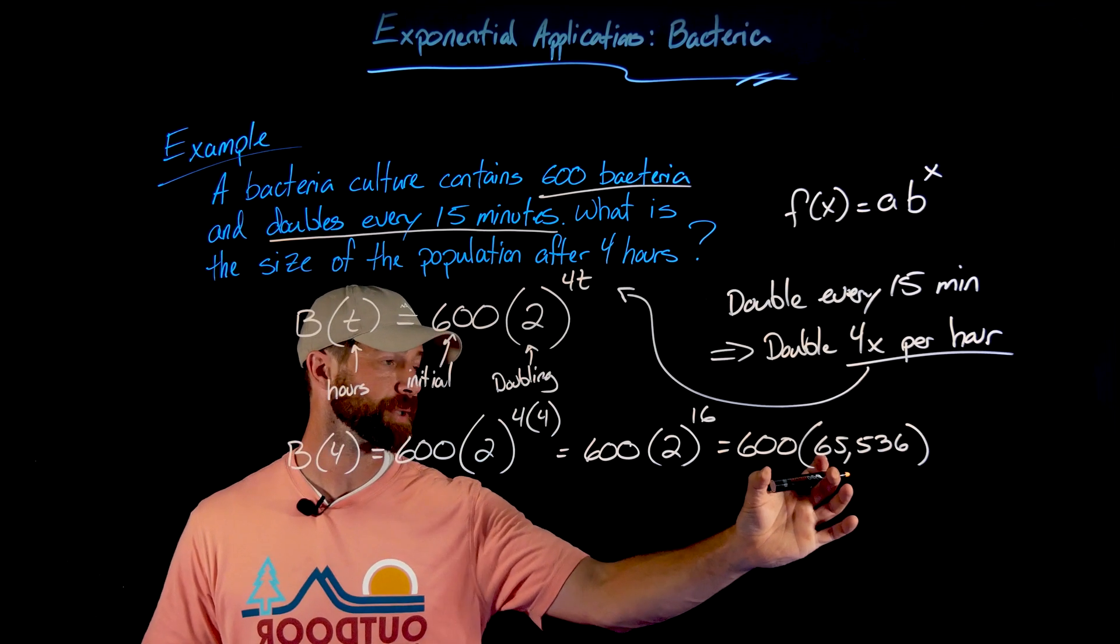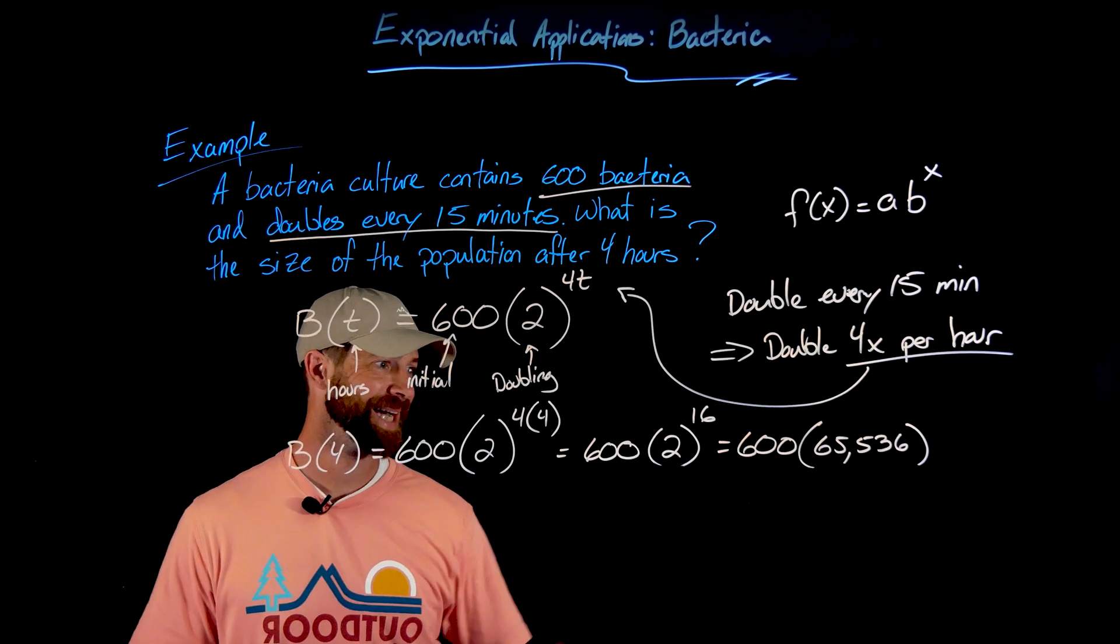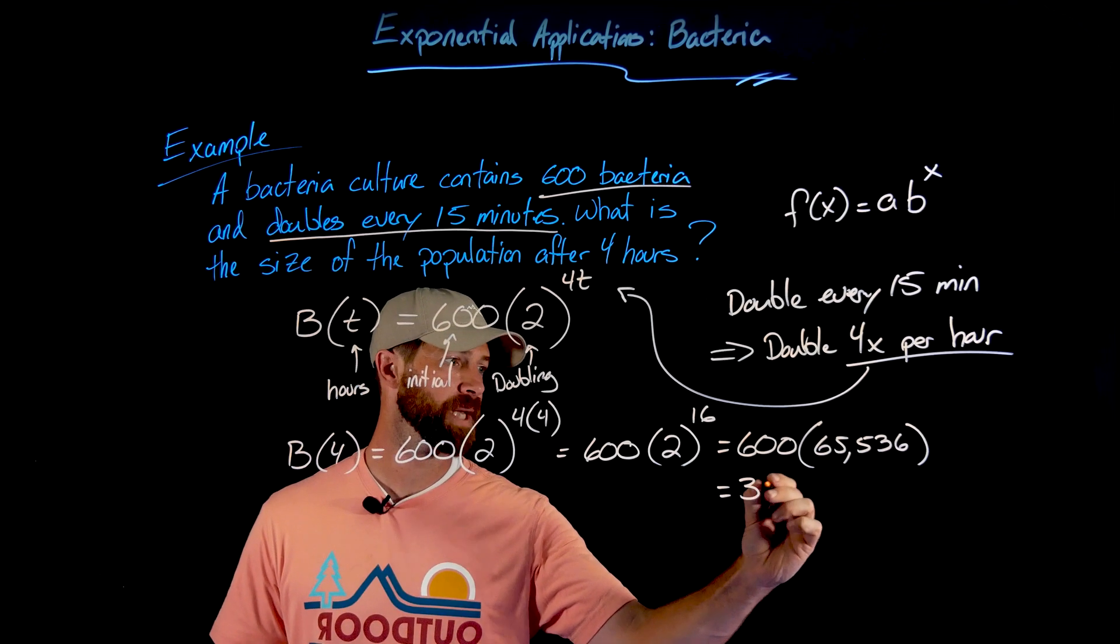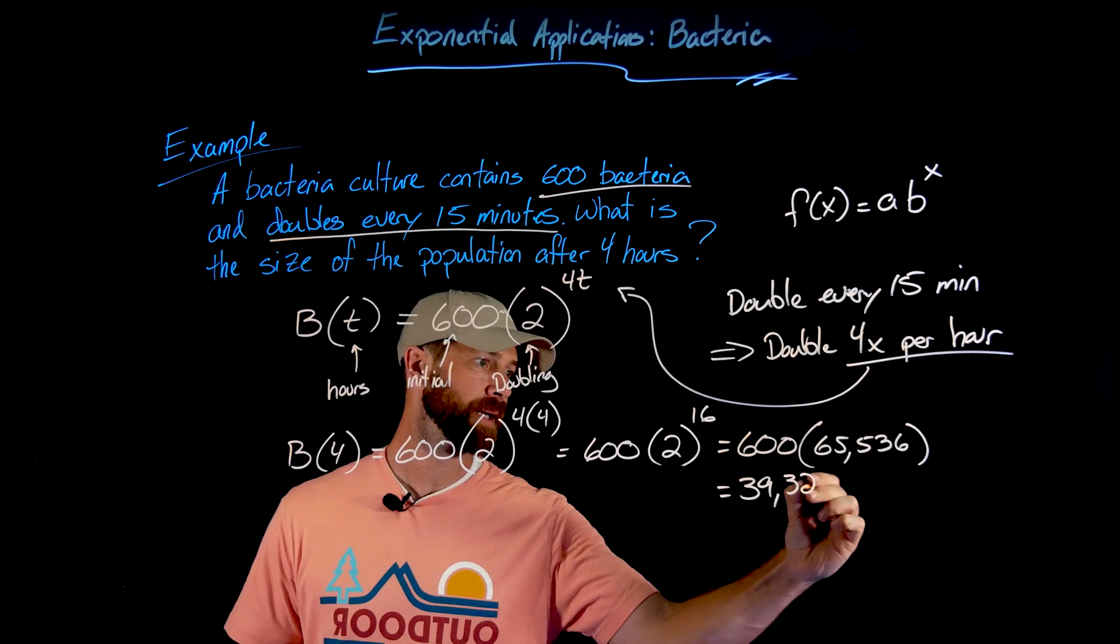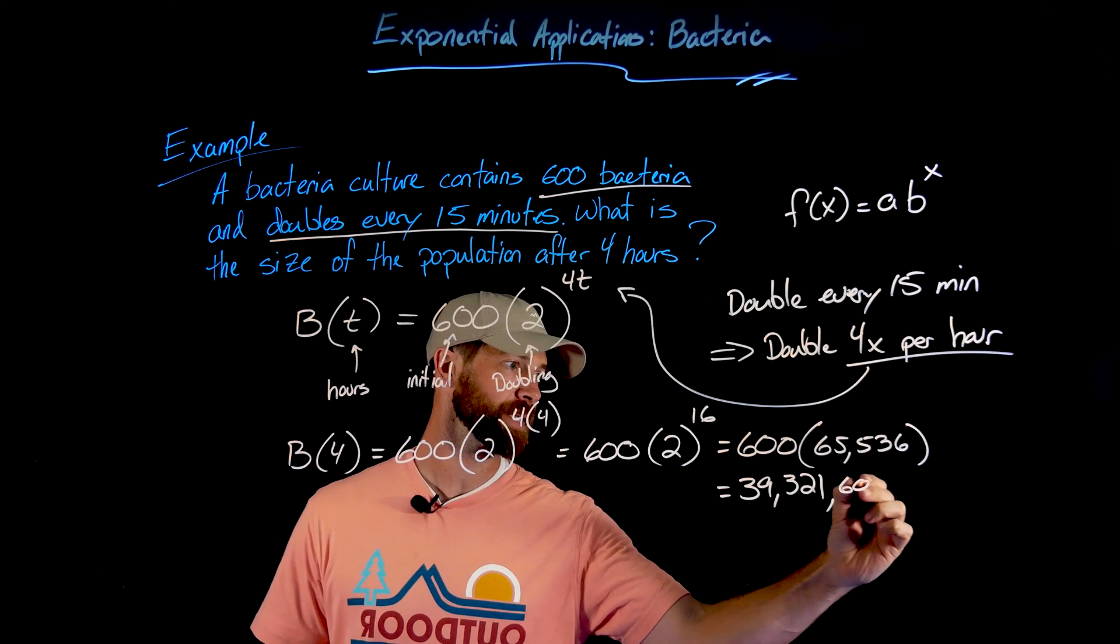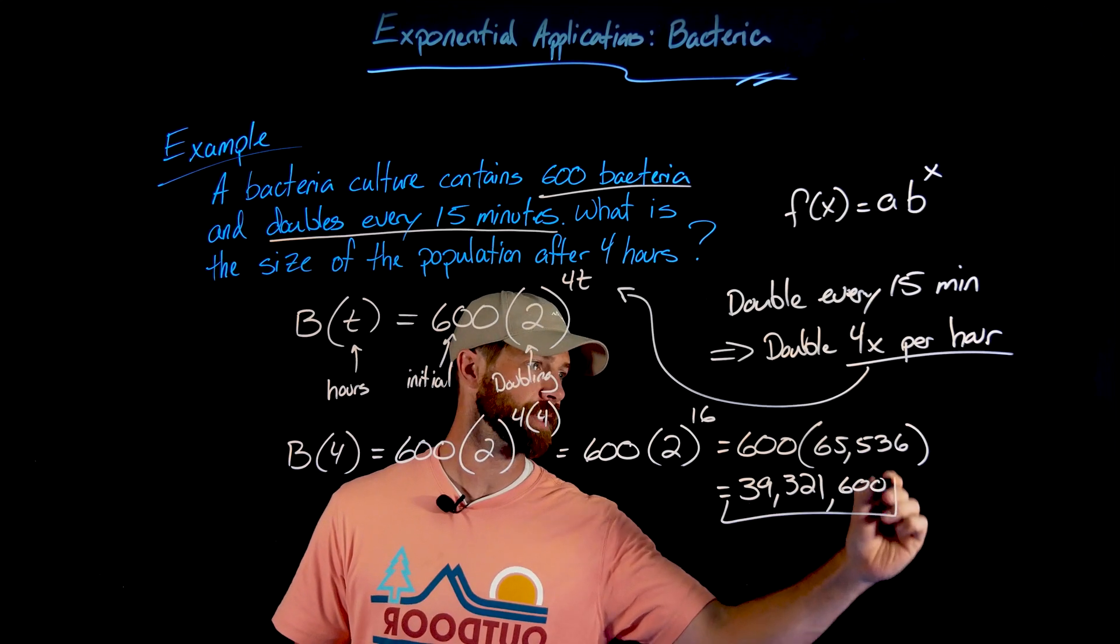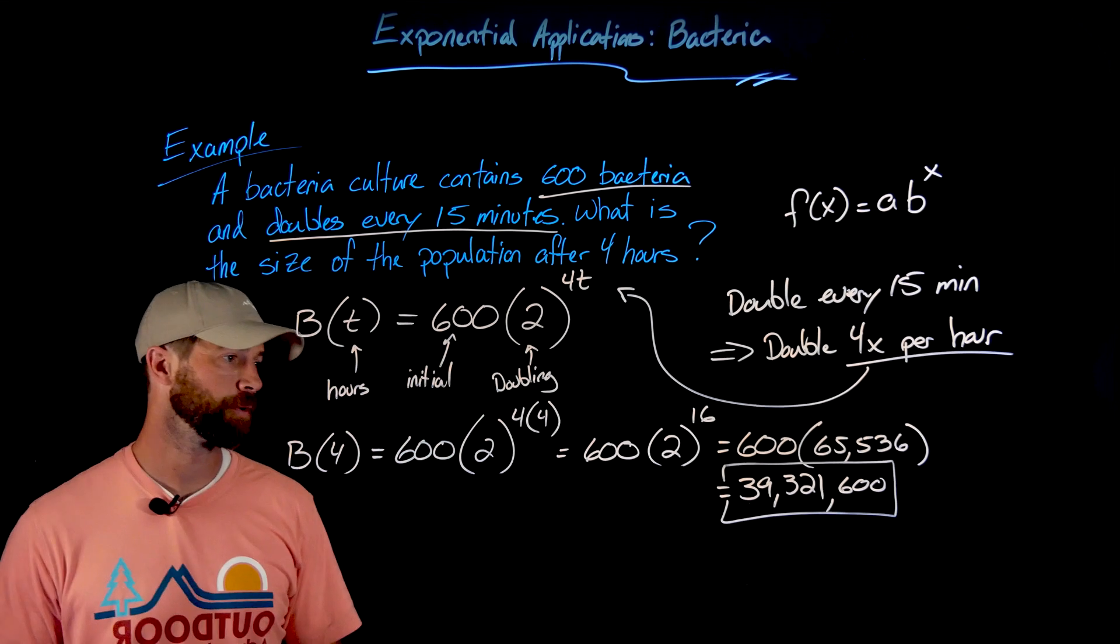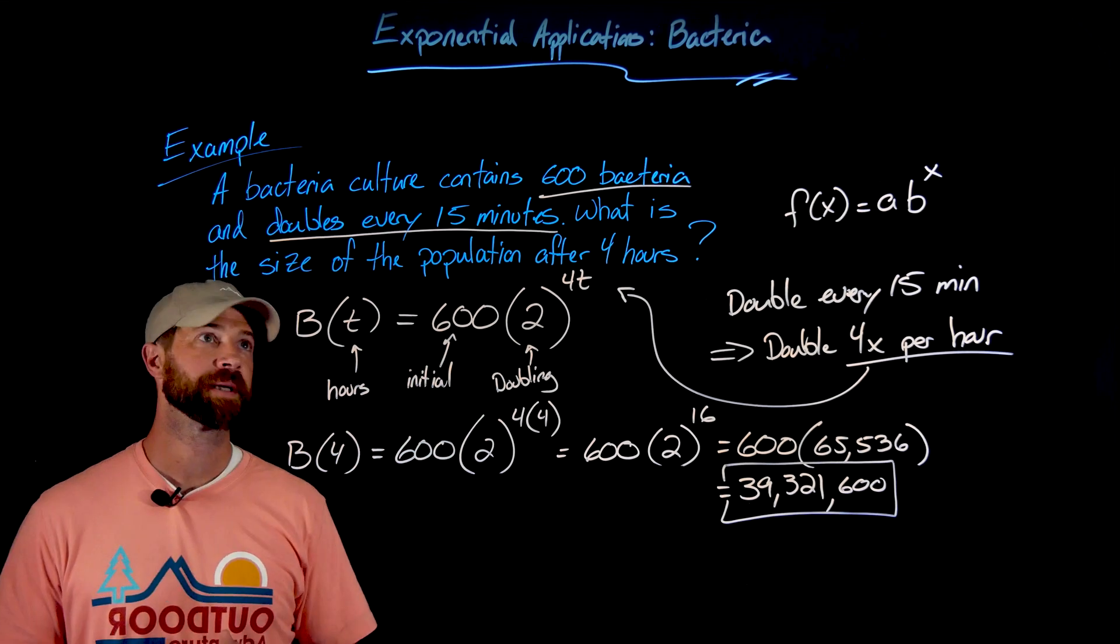This is going to be an extremely large number when we multiply these together. I got 39,321,600—there's our original 600 with almost 40 million of its friends.